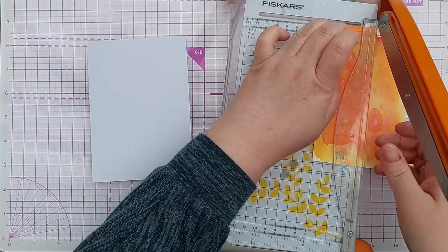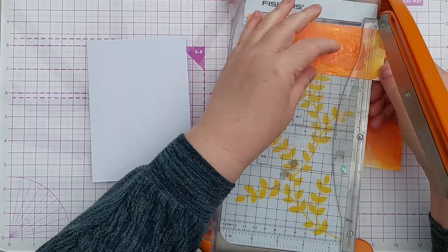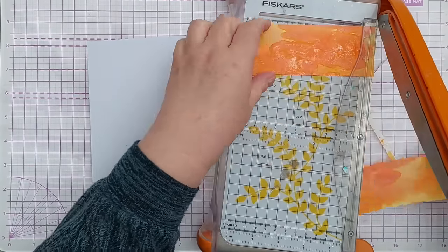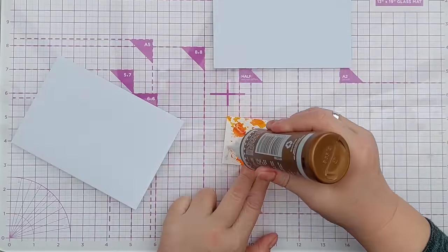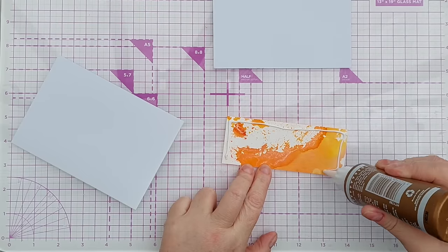So all I've done with this is trim it down a little bit to create a panel that's going to cover just under half of the front of this four by six inch card blank.